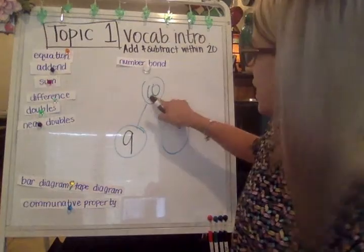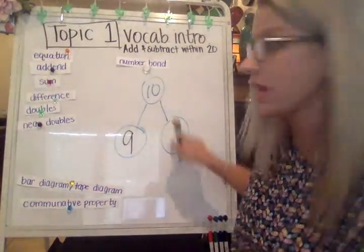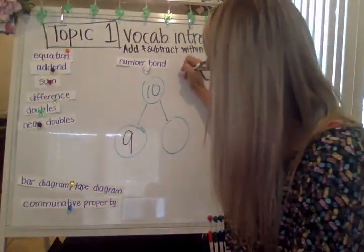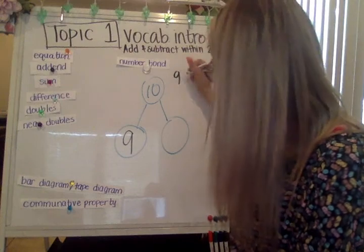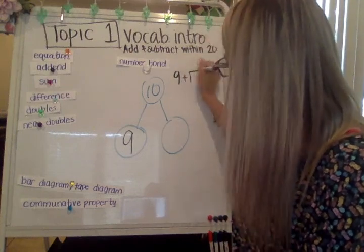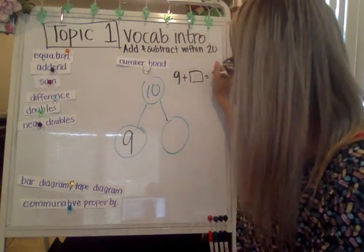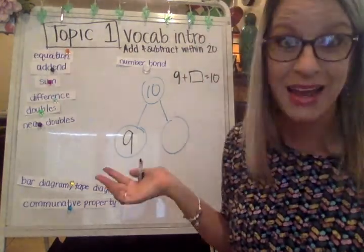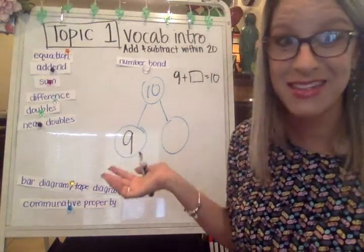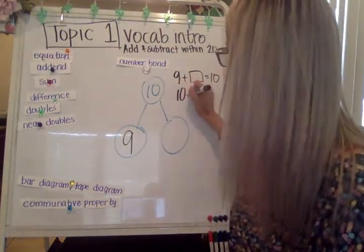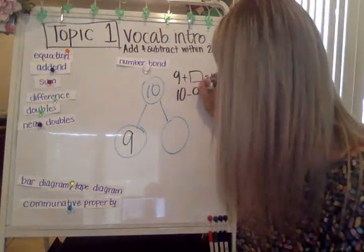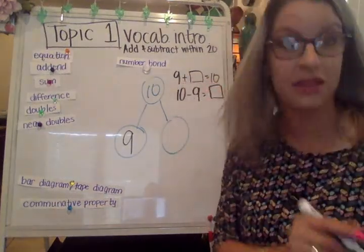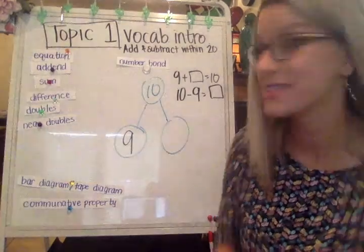Nine plus something equals 10. So I could write an equation about that — nine plus something equals 10, or I could write a subtraction equation of 10 minus nine. That will tell me what the difference is.